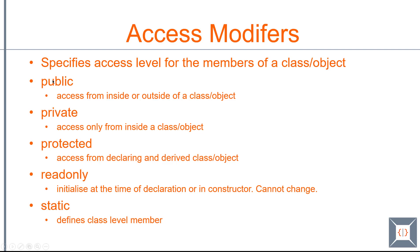The first one is public. When you declare a member as public, you are basically saying that the member is accessible from within the class or object and also from outside the class or object. Whereas when you declare a property as private, you are basically saying that the member is accessible only from within the class or object.